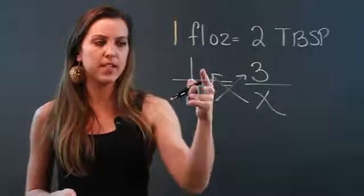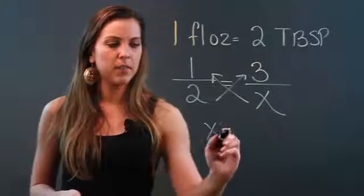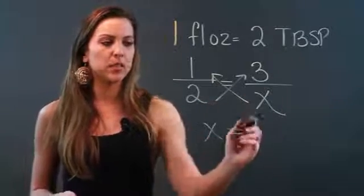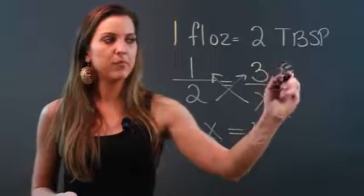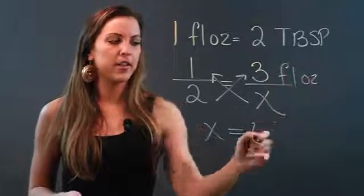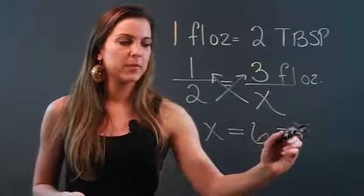So I'm doing x times 1 equals x, bring down my equal sign, 2 times 3 equals 6. So in 3 fluid ounces there are 6 tablespoons.